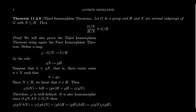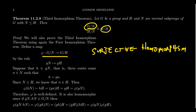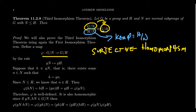The proof of the third isomorphism theorem is very similar to the second isomorphism theorem in that we are going to use the first isomorphism theorem. When you want to prove two things are isomorphic using the first isomorphism theorem, you first establish a surjective homomorphism. We're going to establish a map from G/N to G/H. Once we have that surjective homomorphism, we argue that the kernel of this map is H/N, and then by the first isomorphism theorem these two groups are isomorphic.